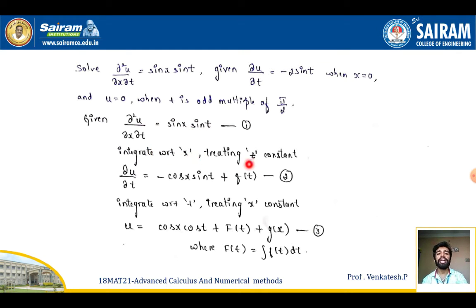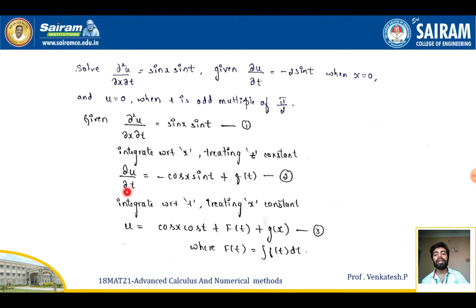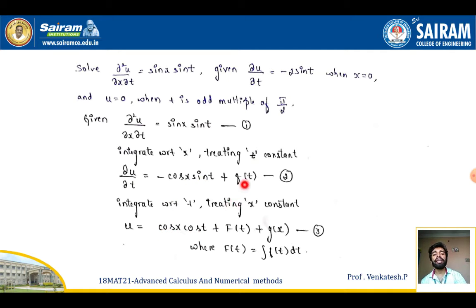Integrating with respect to x treating t constant, I get ∂u/∂t = −cosx·sint + f(t). Again integrating with respect to t treating x constant, I get u = cosx·cost + F(t) + g(x), where F(t) = ∫f(t)dt.